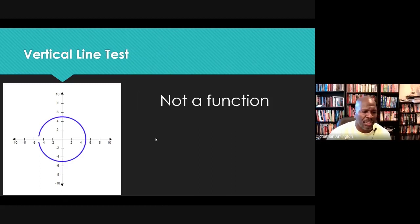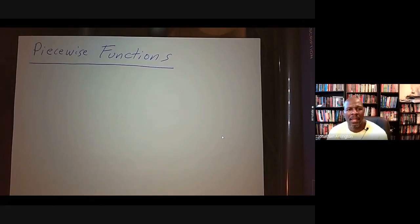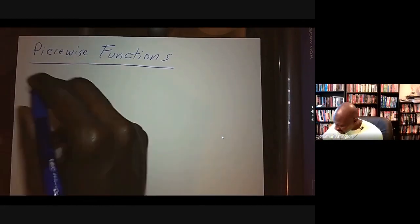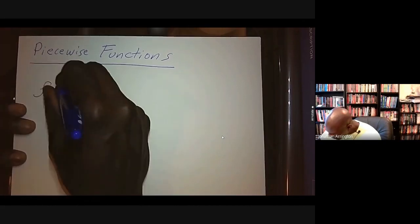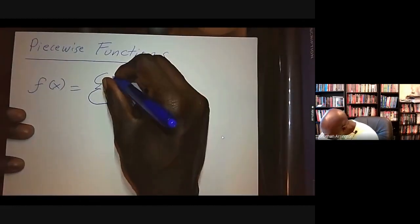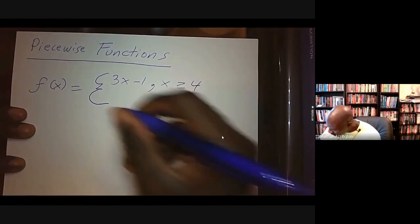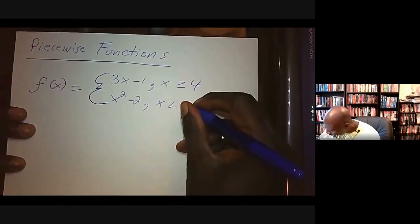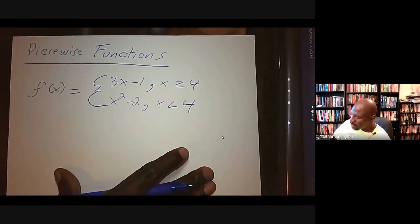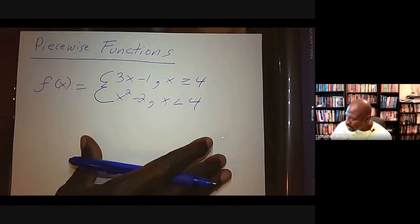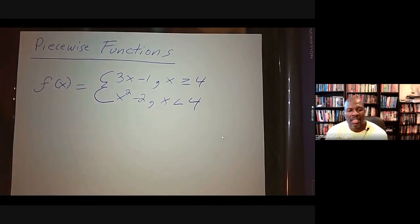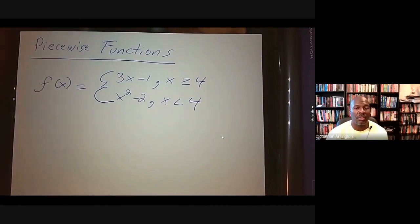Now let's look at piecewise functions. Piecewise functions are pretty important. The nomenclature is very logical: a piecewise function is a function that consists of two or more pieces — it can have any number of pieces from two to infinity. For our course, the piecewise functions we'll see for the most part will consist of two pieces, though every now and then we may have three.